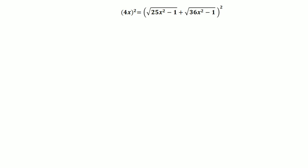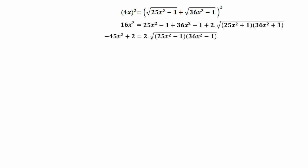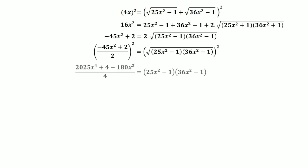Squaring both sides and applying the (a + b)² formula: 16x² = (25x² − 1) + (36x² − 1) + 2√[(25x² − 1)(36x² − 1)]. After simplification and dividing both sides by 2, we isolate the square root term, then square both sides again to eliminate it, expanding with the (a + b)² formula.